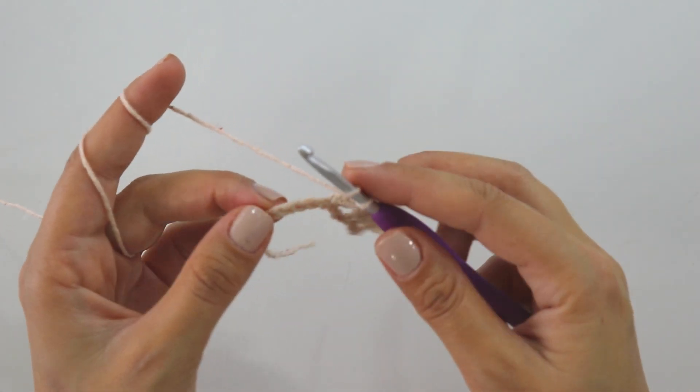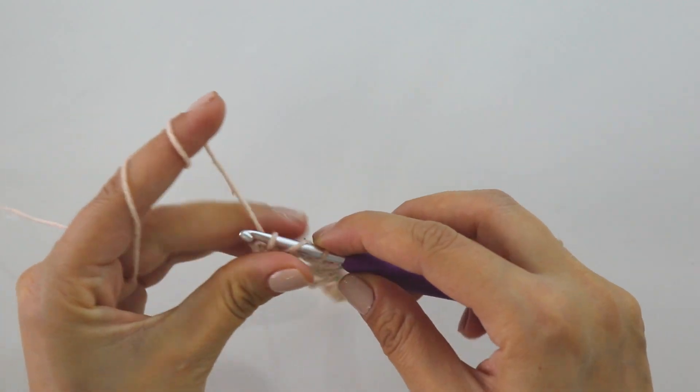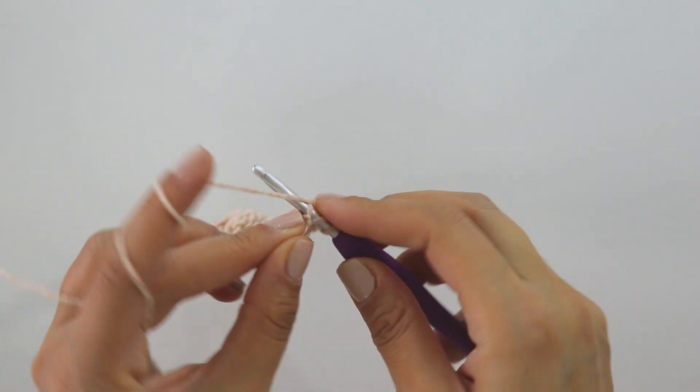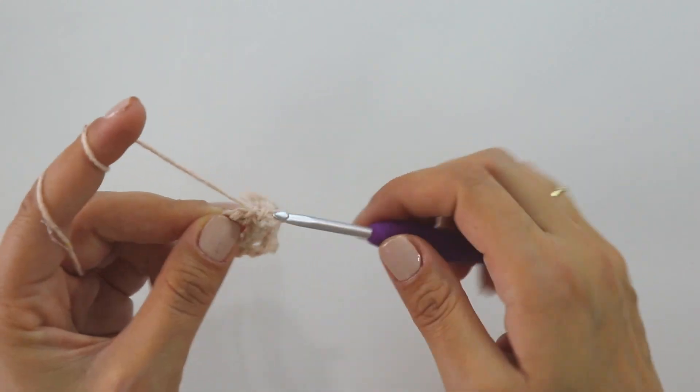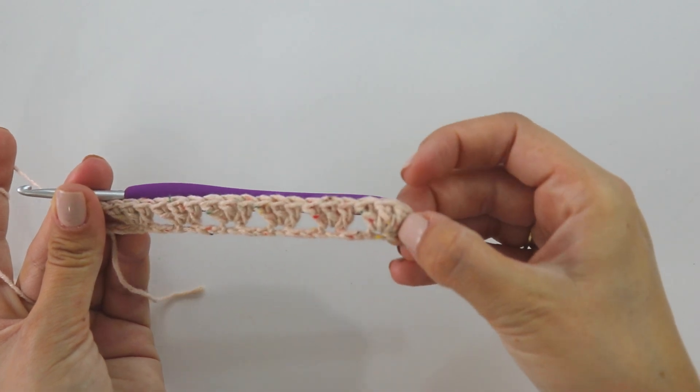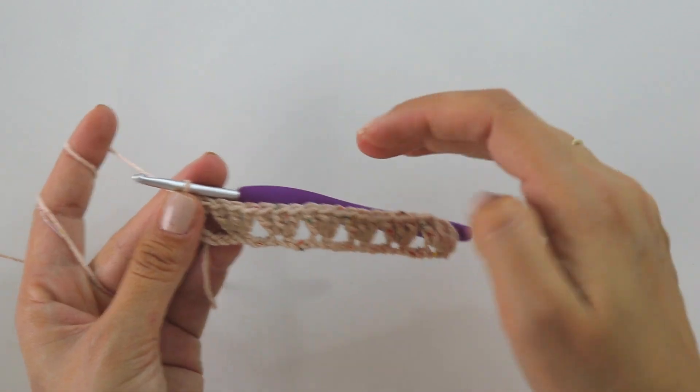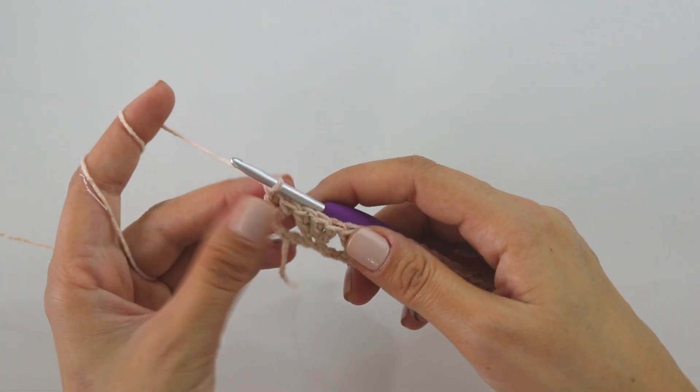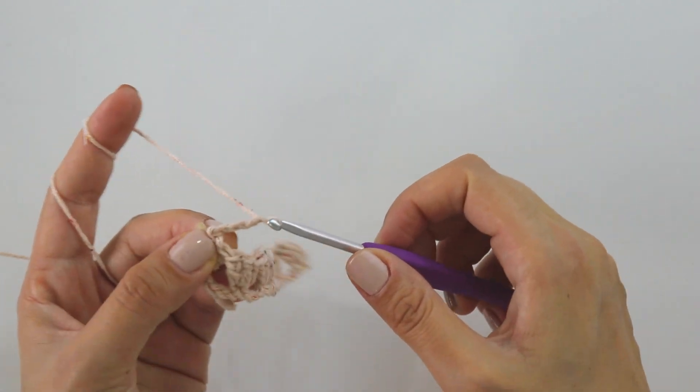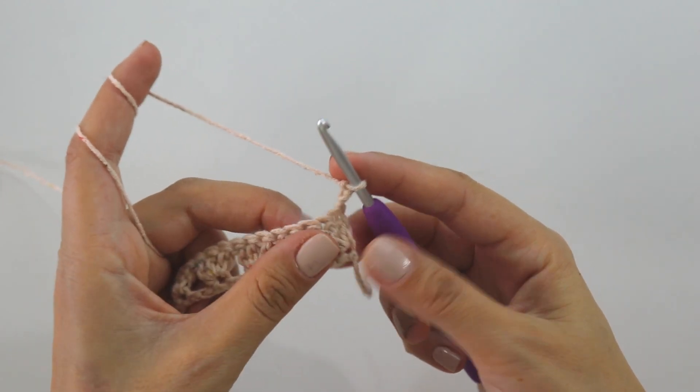Yarn over, skip three, into this last chain put only two double crochets - one, two. You can count this three chain as a double crochet, okay, and we are finishing with two double crochets. Then chain three. Turn your work. Starting from here it's just one row repeat.